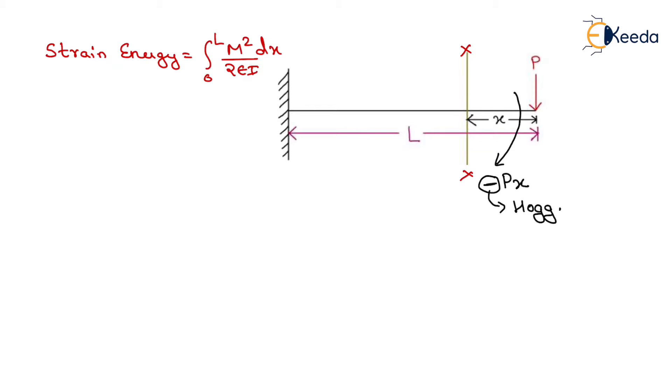We just put this value in this equation: 0 to L minus P x whole square into dx upon 2EI. After solving this, we will get 0 to L, P square x square upon 2EI into dx.